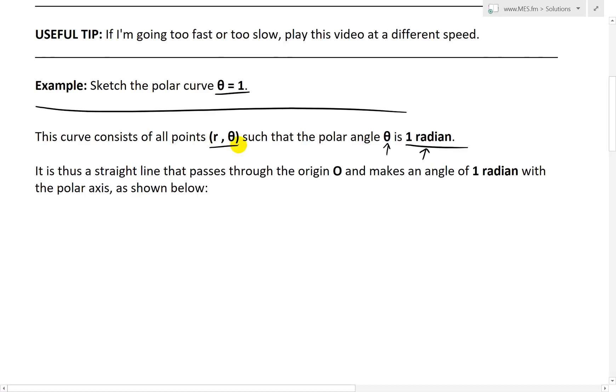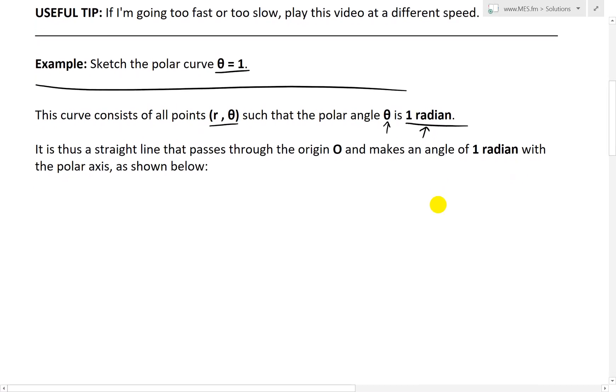So basically, all the points are in theta when theta is equal to 1 radian. So it is thus just a straight line that passes through the origin O and makes an angle of 1 radian with the polar axis as shown below.